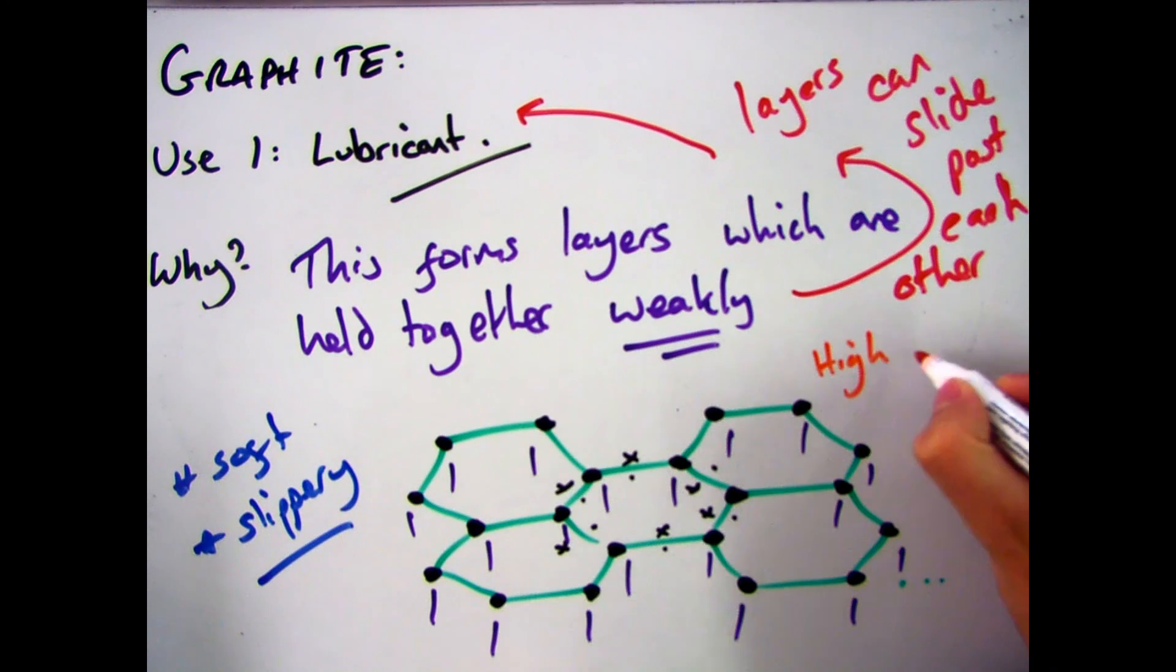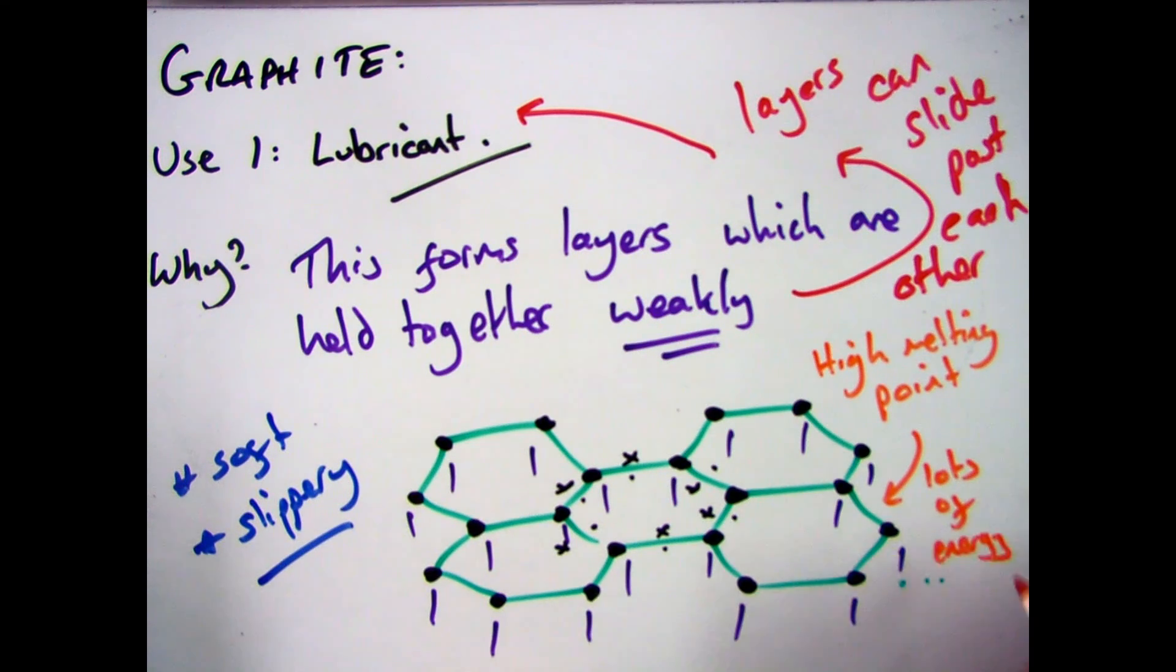These properties are ideal for use in lubricants in cars. And one of the other main things is they, like other giant covalent compounds, have high melting points because of the strong covalent bonds. Which means that they won't melt and they won't break down when used in car engines.